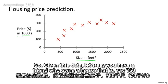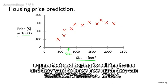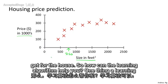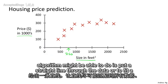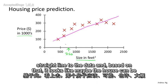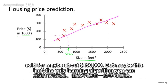Given this data, let's say you have a friend who owns a house that is 750 square feet, and they're hoping to sell the house and want to know how much they can get for it. One thing a learning algorithm might do is put a straight line through the data, and based on that, it looks like maybe the house can be sold for about a hundred and fifty thousand dollars.